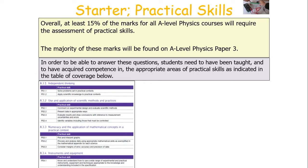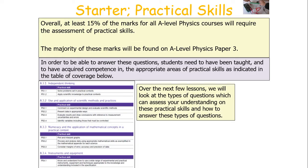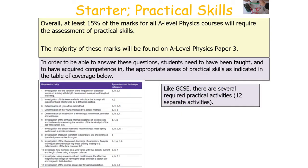In order to be able to answer these questions, students need to have been taught and acquired competence in the appropriate areas of practical skills as indicated in the table below. These include independent thinking, the use and application of scientific methods and practices, numeracy and the application of mathematical concepts in practical contexts, and the use of instruments and equipment. Over the next few lessons, we'll look at the different types of questions which can assess your understanding of these practical skills, and we'll look at how to answer these types of questions.